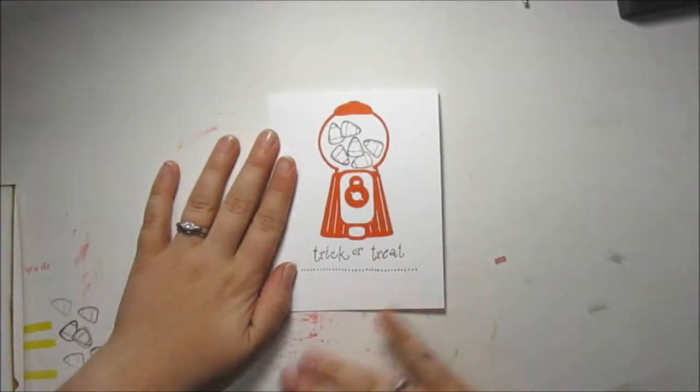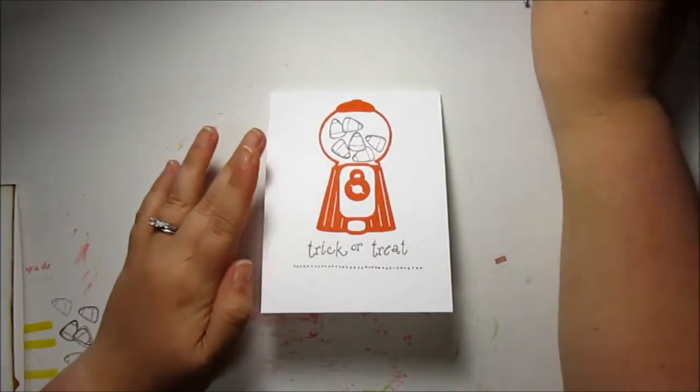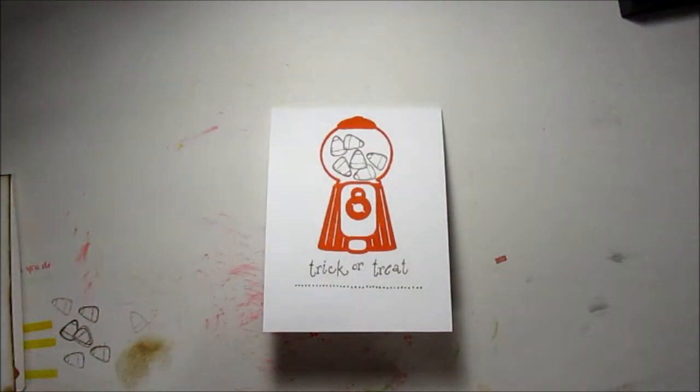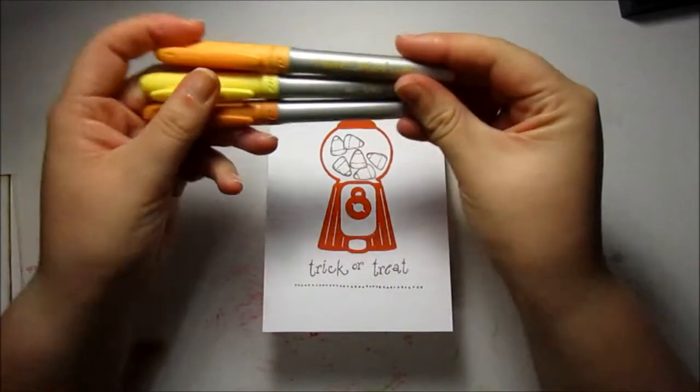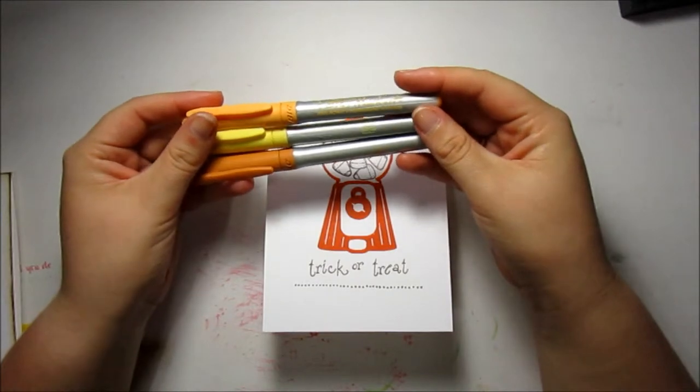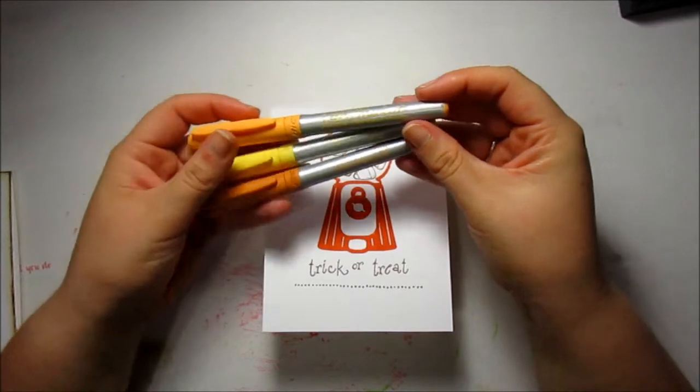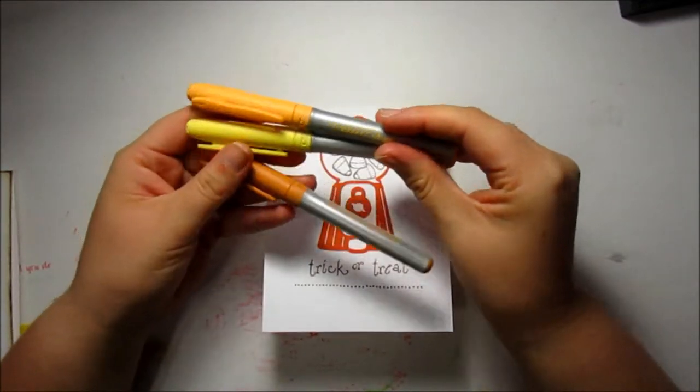So my dotted line is all finished now, and now I just wanted to color in the candy corn. I don't have Copic markers, they're really expensive and kind of out of my crafting budget. So I use these Bic markers. They are alcohol based just like the Copic markers are.